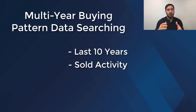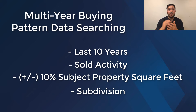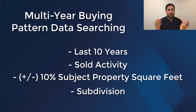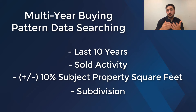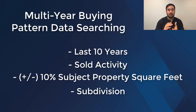We're going to look for the last 10 years of data as a kind of standard. We're going to look at the sold information, and then we're going to look for data in that neighborhood that is within 10% square feet up and down. For a great example, let's think about a house that's 3,000 square feet — we're going to go in that neighborhood the last 10 years of sold data, and we're going to go from 2,700 square feet to 3,300 square feet. That's the exact example we're going to use next to show you how to turn on the multi-year buying pattern and load your data in to find and present that graph.